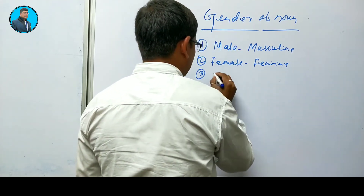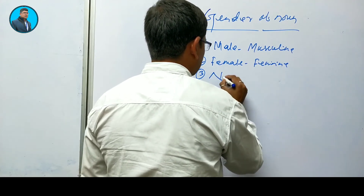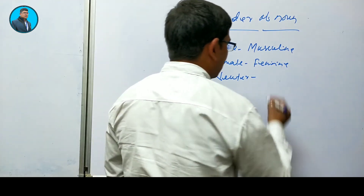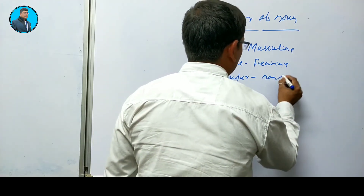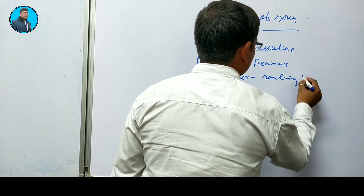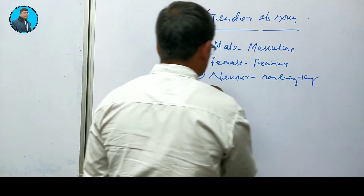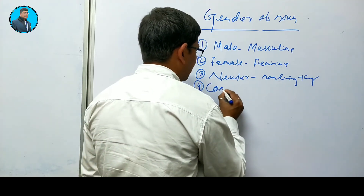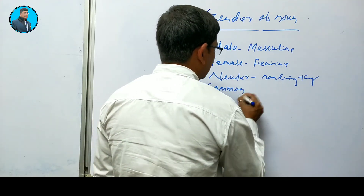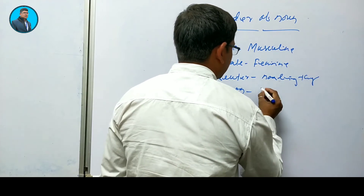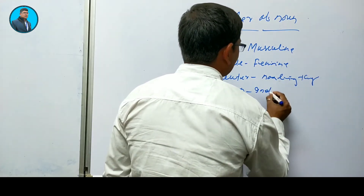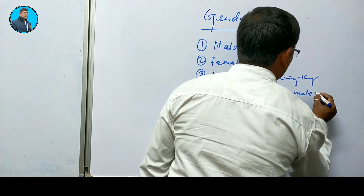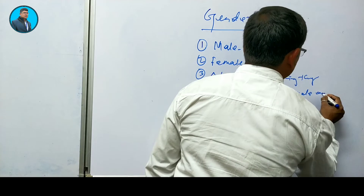Number three is neuter — neuter means the non-living things. And number four is common gender, which indicates both male and female.